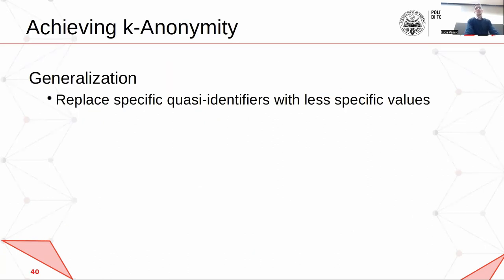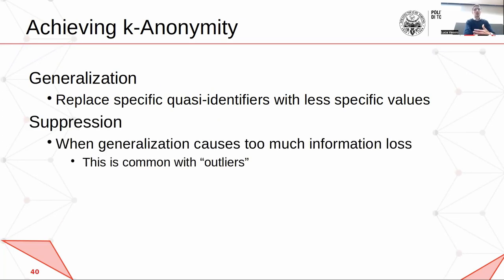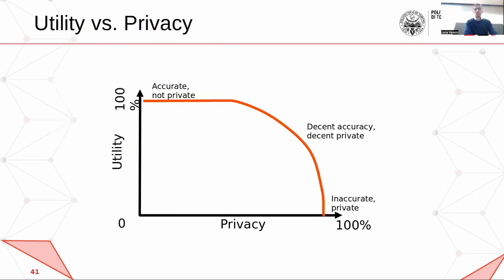Generalization is one technique. There are other techniques like modification or suppression — removing cases. One important thing true for k-anonymity but with whatever algorithm trying to anonymize data is that you cannot have complete privacy and 100% utility at the same time.